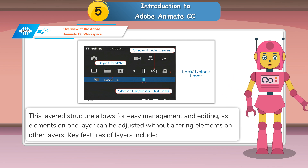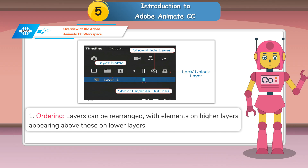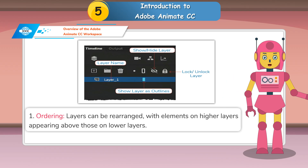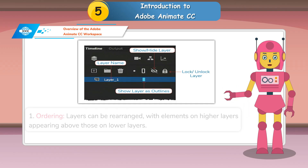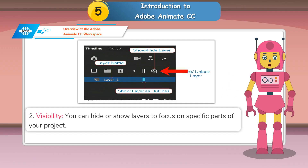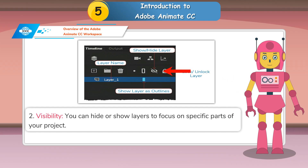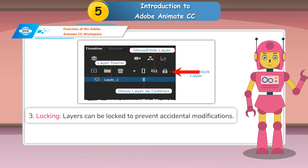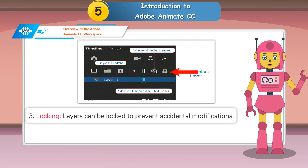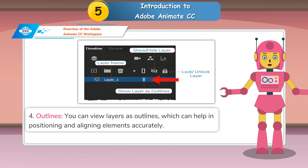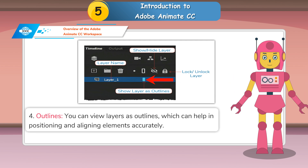Key features of layers include: 1. Ordering — layers can be rearranged, with elements on higher layers appearing above those on lower layers. 2. Visibility — you can hide or show layers to focus on specific parts of your project. 3. Locking — layers can be locked to prevent accidental modifications. 4. Outlines — you can view layers as outlines, which can help in positioning and aligning elements accurately.